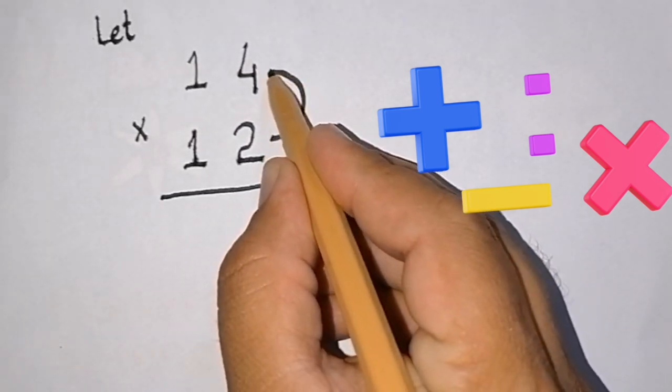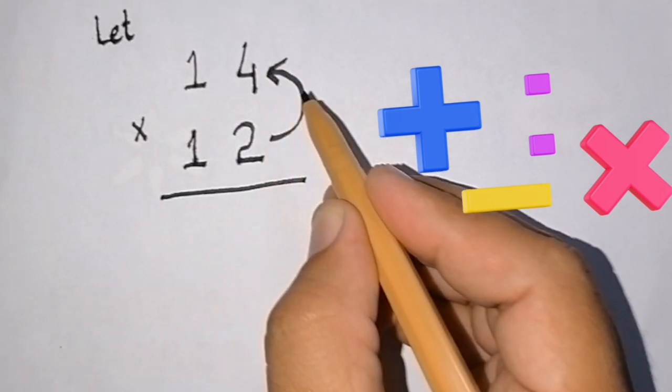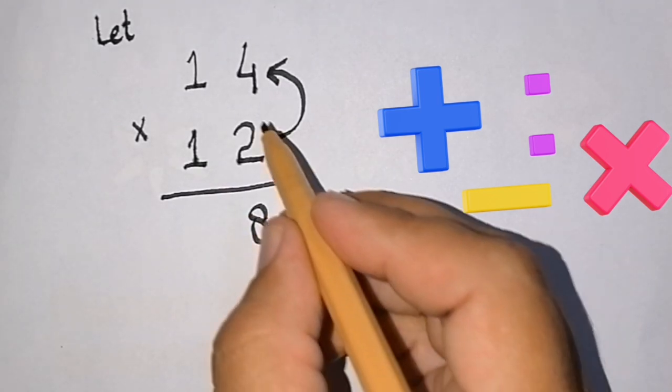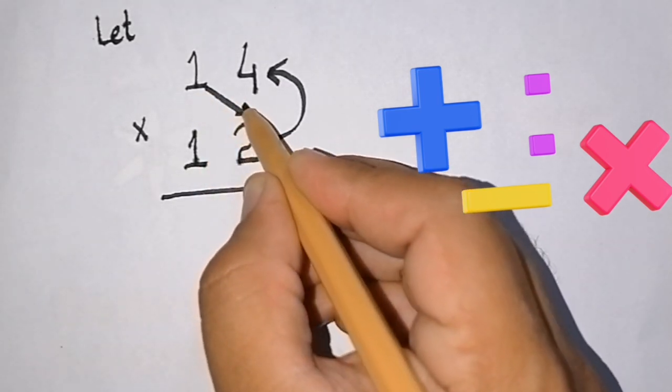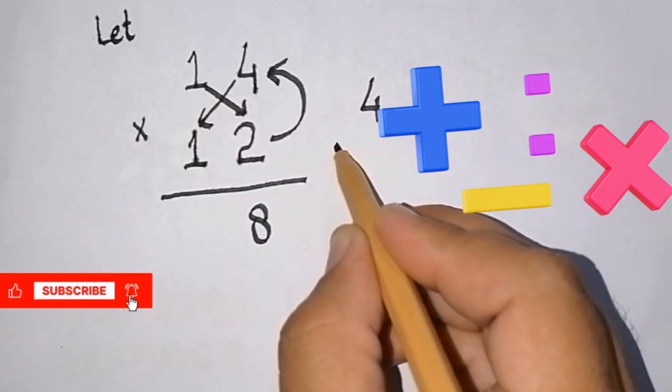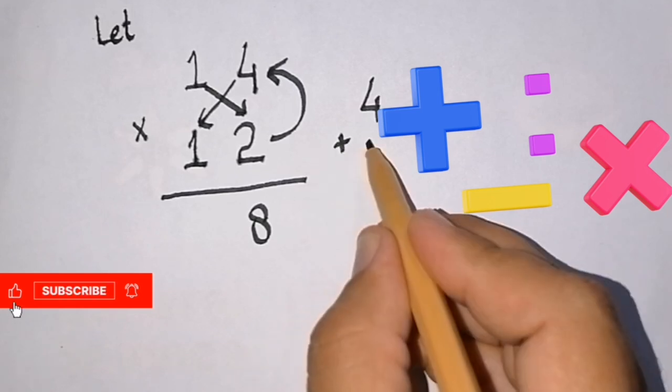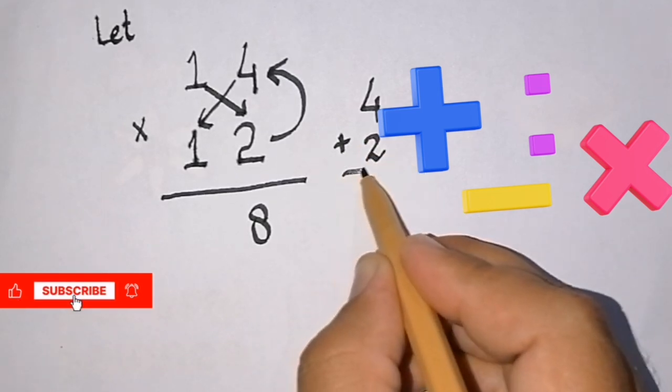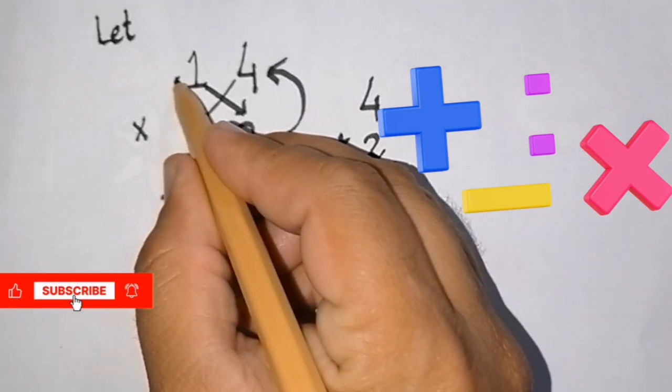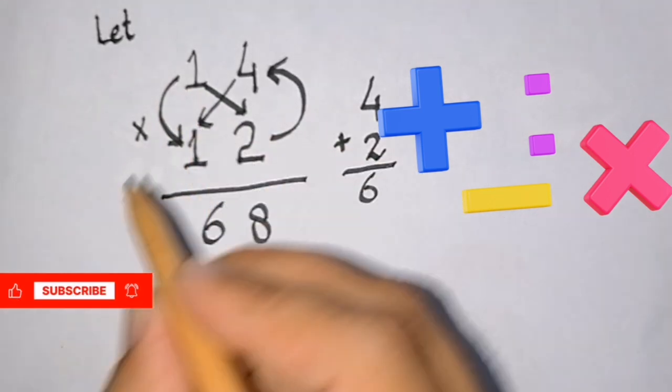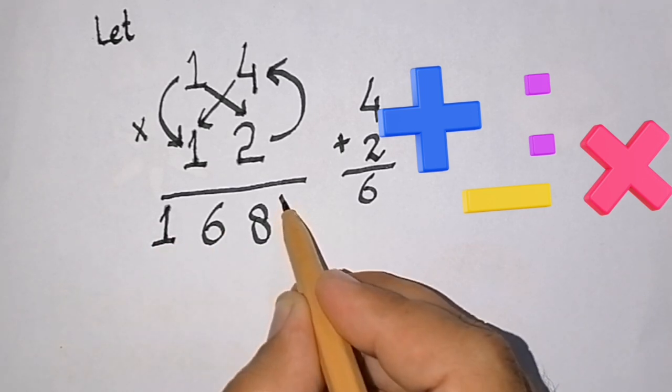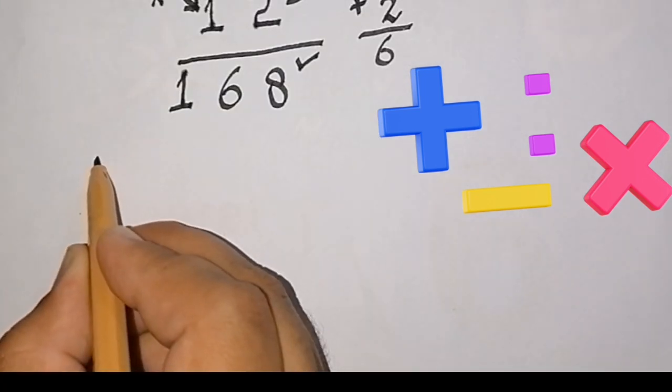Simply multiply 2 with 4, it will give us 8. Then cross multiply the two digits and add them. So 4 multiply with 1 is 4, and 2 multiply with 1 is 2. We will add 4 and 2, it gives us 6. Now multiply the first digits, 1 multiply 1 is 1. The answer is 168.